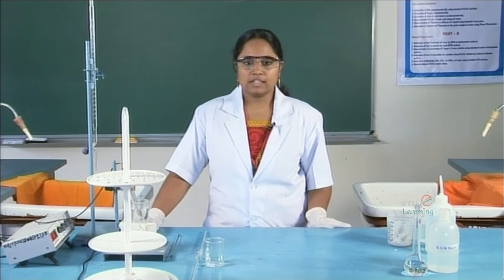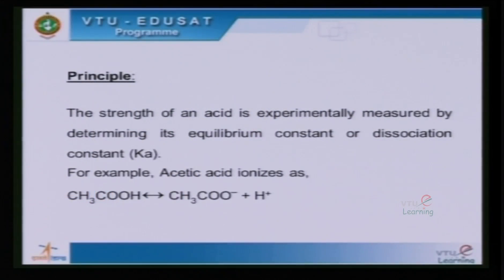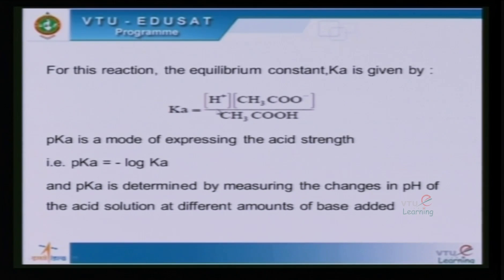For example, acetic acid ionizes as CH3COOH → CH3COO⁻ + H⁺ as shown in this equation. For this reaction, the equilibrium constant Ka is given by: Ka = [H⁺][CH3COO⁻] / [CH3COOH].